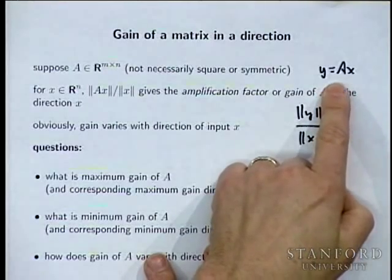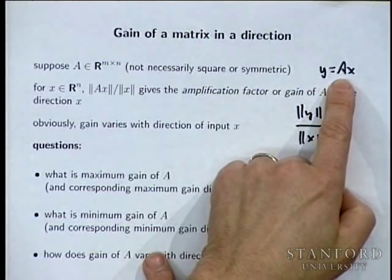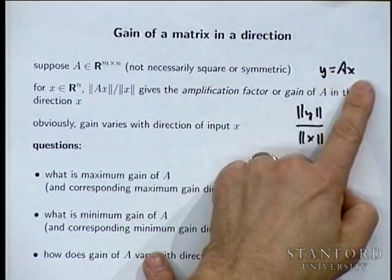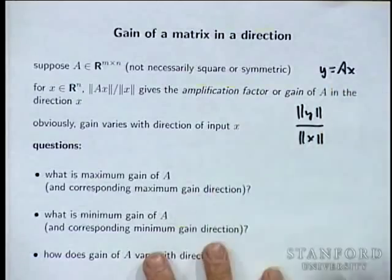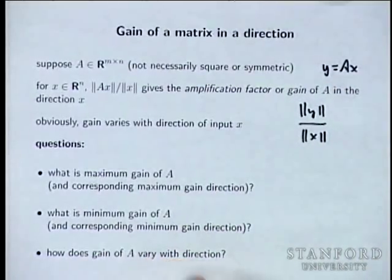There are cases when the gain doesn't vary with direction. One is when A is orthogonal — if A is square and its columns are orthonormal, then for y = Ax, the norm of y equals the norm of x. The gain is one in all directions.